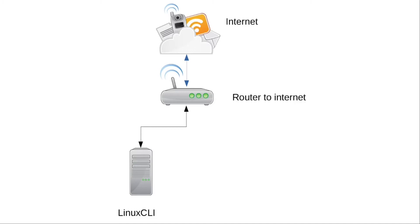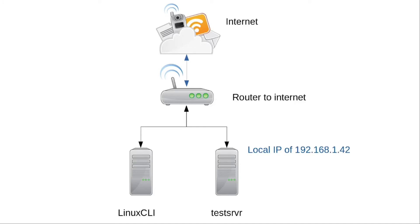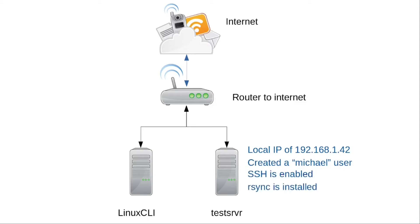I have added another computer to my local network — behind my router to the internet. The computer I set up has a local IP address of 192.168.1.42. I have created a Michael user on that computer, enabled SSH on it, and rsync is installed on that computer.